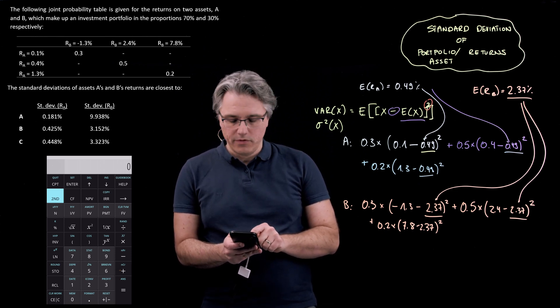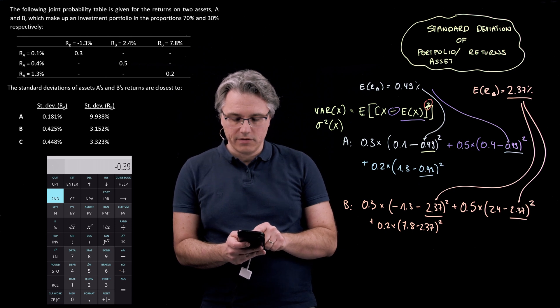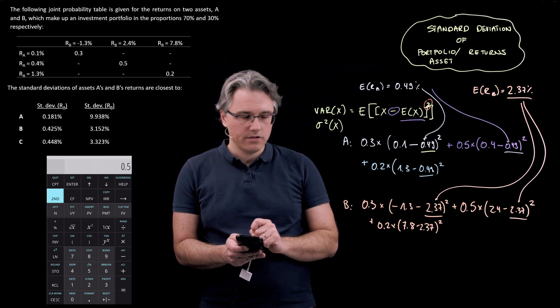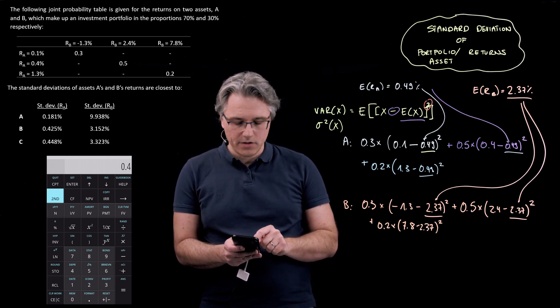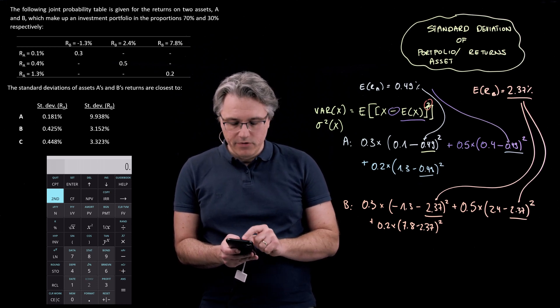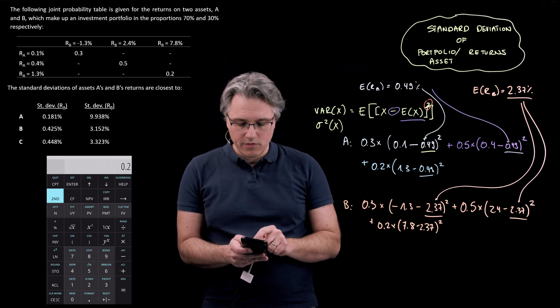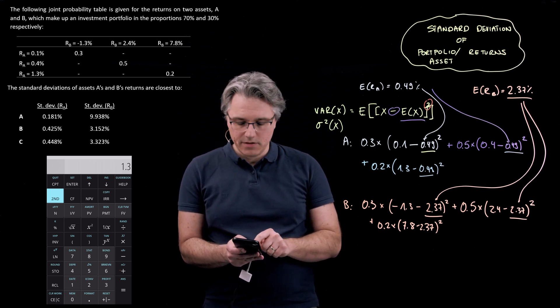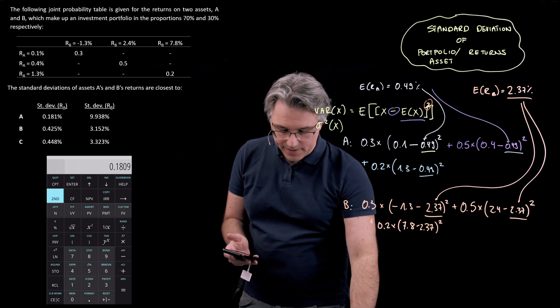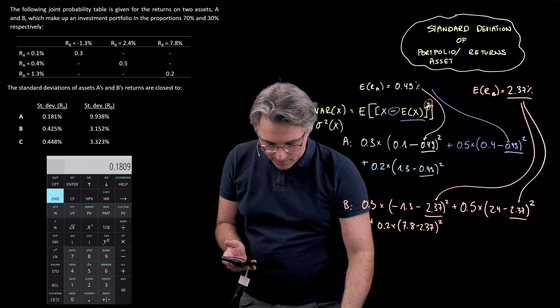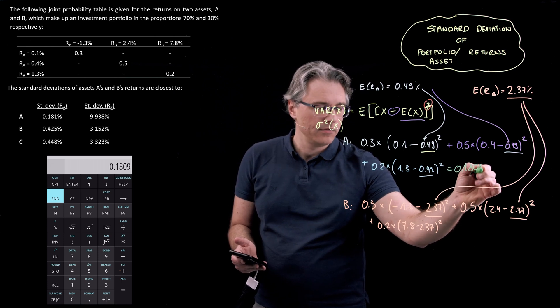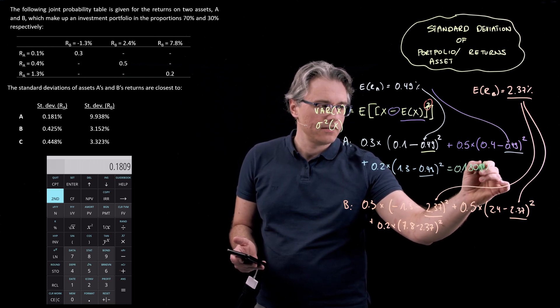So 0.3 times open bracket 0.1 minus 0.49 close bracket square this, OK, plus 0.5 times open bracket 0.4 minus 0.49 close bracket square, plus 0.2 times open bracket 1.3 minus 0.49 close bracket square it, equals. And we've got a sum over here and that sum seems to be 0.1809 and this is in percentages squared.